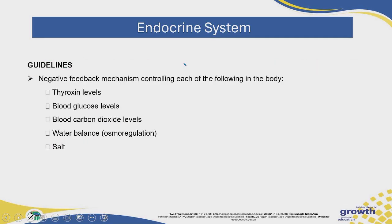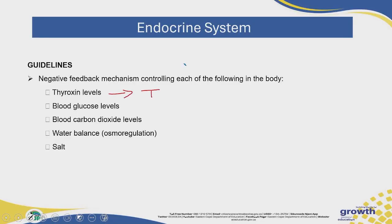According to your exam guidelines, you need to look at the negative feedback mechanisms controlling the following in the body: thyroxin levels — produced by your thyroid gland — blood glucose levels, carbon dioxide levels, water balance, and salt balance. Remember that water balance is also known as osmoregulation. Salt also plays a role in balancing the water concentration in your blood, and we will look at that in the next slide.